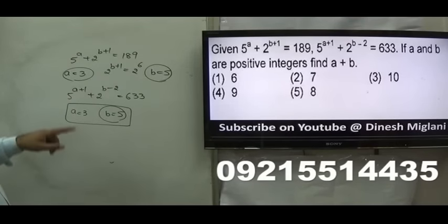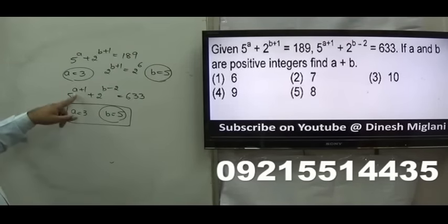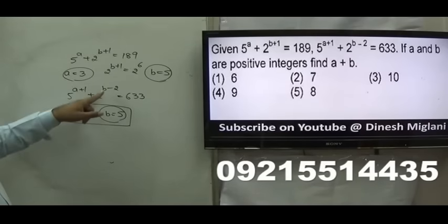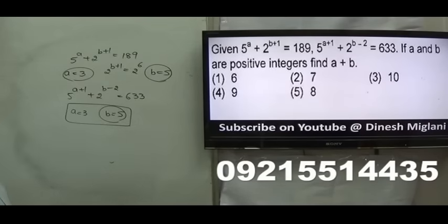Verifying: if A = 3, B = 5, then 5^4 = 625 and 2^(5−2) = 2^3 = 8. So 625 + 8 = 633. This confirms the answer. Hence the fifth option, A + B = 8, is my answer.